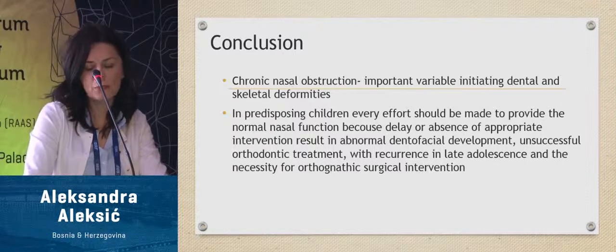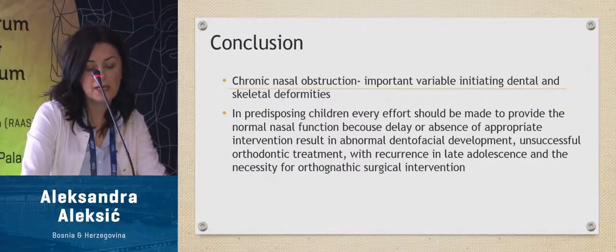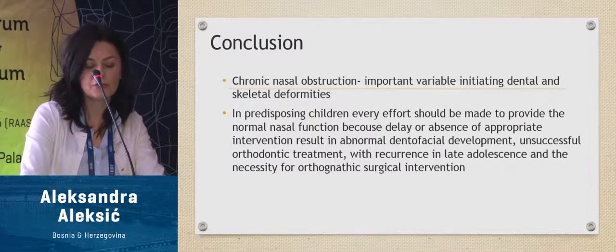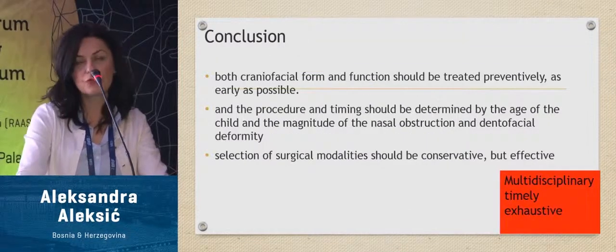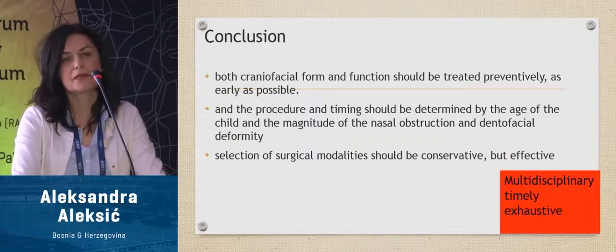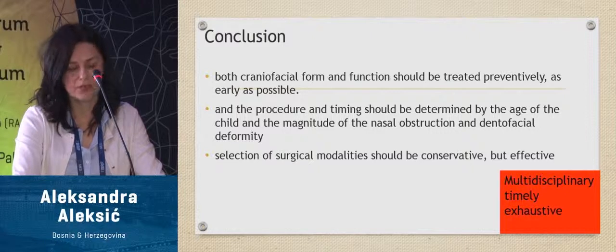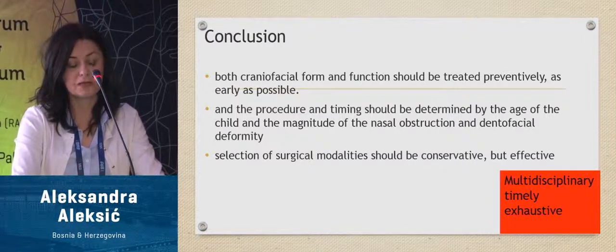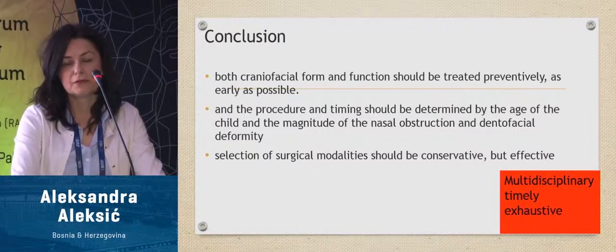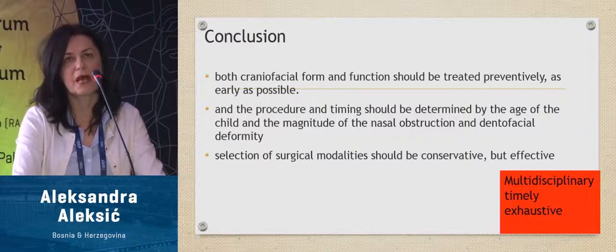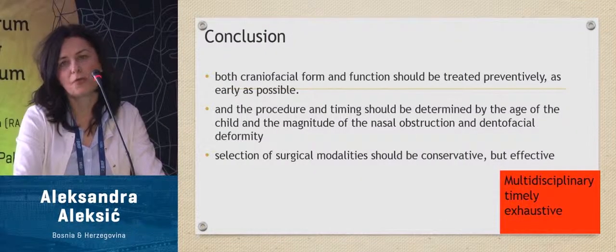If chronic nasal obstruction is indeed an important variable initiating dental and skeletal deformities in predisposed children, every effort should be made to provide normalization of function. Delay or absence of appropriate intervention results in abnormal dental facial development and compromises successful orthodontic treatment. An otorhinolaryngologist, pediatrician, pediatric dentist, and orthodontist must take note of chronic mouth breathing in predisposed children. Both craniofacial form and function should be treated as early as possible. The procedure and timing should be determined by the age of the child and the magnitude of the nasal obstruction and dentofacial deformities. Further well-controlled longitudinal observational studies are needed to establish a direct relationship between chronic nasal obstruction and craniofacial deformities. The variables are numerous and must be placed in appropriate scientific perspective.